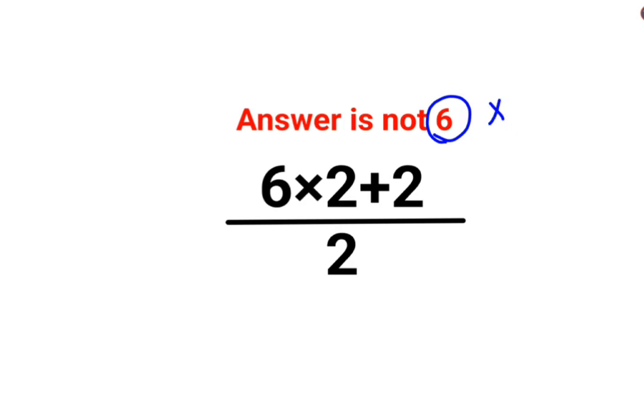See, here we have 6 multiplied by 2 plus 2. So here what we should do is, first we will do the numerator which is 6 multiplied by 2 is 12 plus 2.